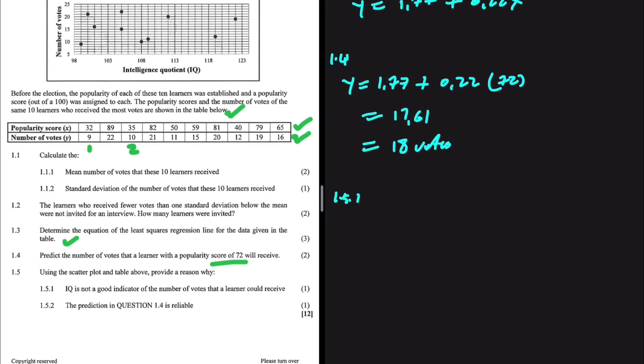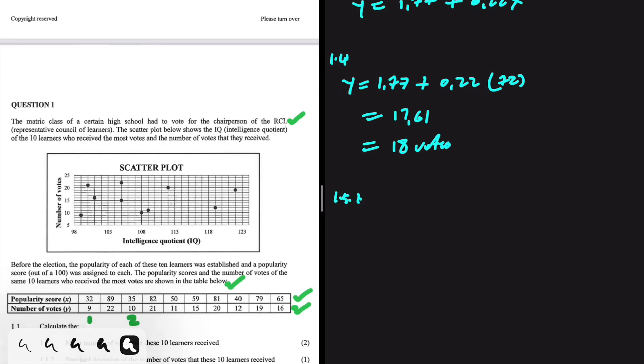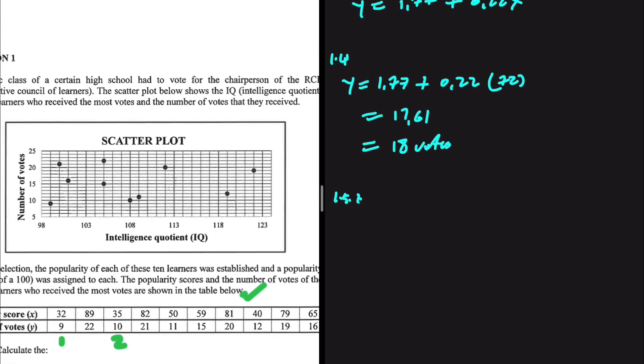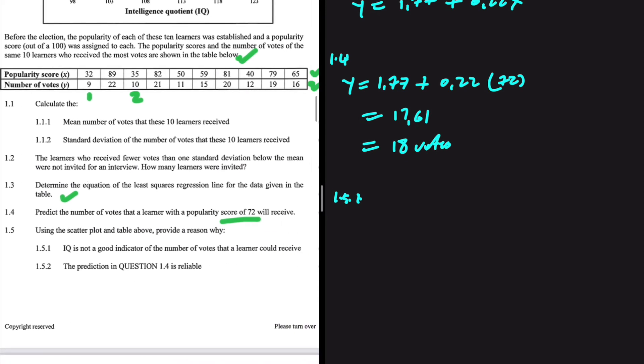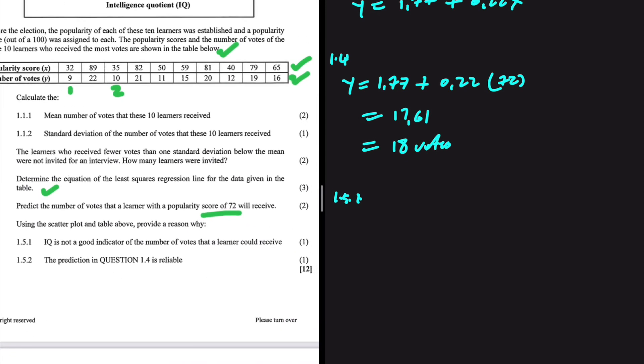Let's go ahead and do 1.5.1. Use the scatterplot and the table above and provide a reason why IQ is not a good indicator for the number of votes that a learner could receive. As you can see from the scatterplot here, there's no correlation between IQ and the number of votes. This person has a very low IQ and so many votes. And this person has a very high IQ and they have a lot of votes. Even the people in the middle with average IQ, they have a lot of votes. So there isn't really a relationship between IQ and the number of votes, it seems. And then, so that is why IQ is not a good indicator because there is a very low correlation between the IQ and the number of votes.